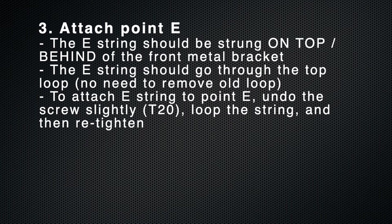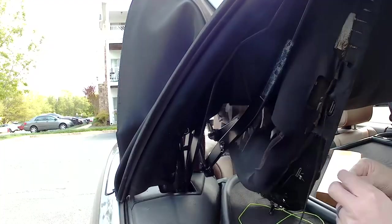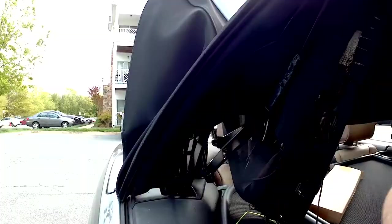The third step is to attach point E. Point E is the topmost string that's by itself. The string should go behind or on top of that rod, shown right there in the middle, up through the loop. There's no need to remove the top hardware. Then we'll fasten on screw E by loosening it a little bit, looping it around, and then tightening it back again.